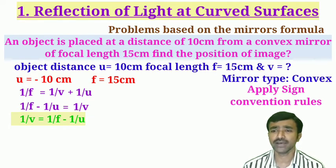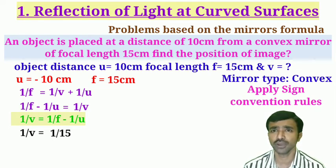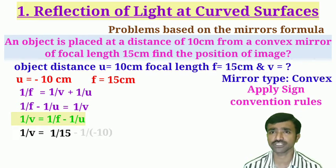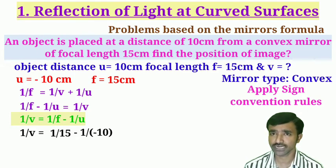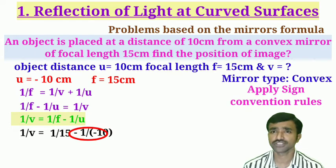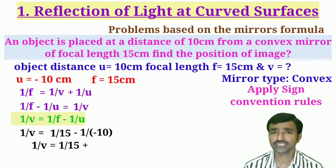Now substitute the values. 1/v = 1/f − 1/u. Here f = +15 according to sign convention, and u = −10. So there is a minus sign in the relation and u is negative, giving minus × minus = plus. Therefore, 1/v = 1/15 + 1/10.